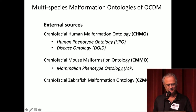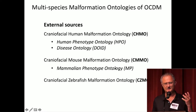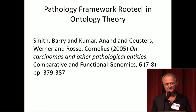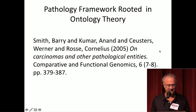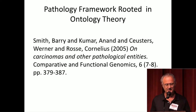Onard is creating a way to tie all these together by building a pathology framework rooted in ontology theory, based on a paper by Barry Smith and others including Cornelius Ross, the founder of the Foundational Model of Anatomy, which is basically the inspiration for the OCDM.